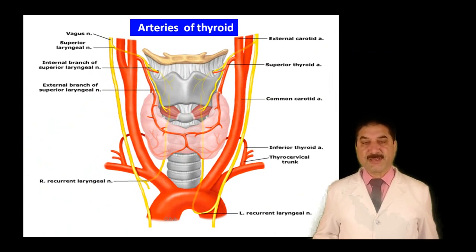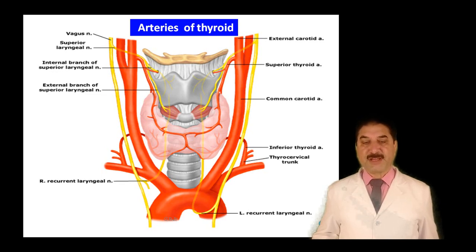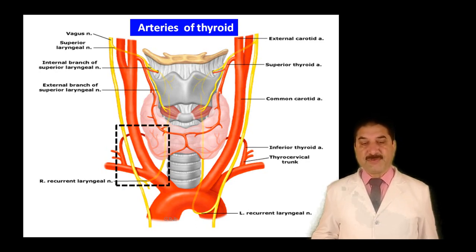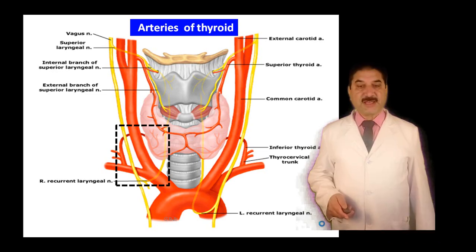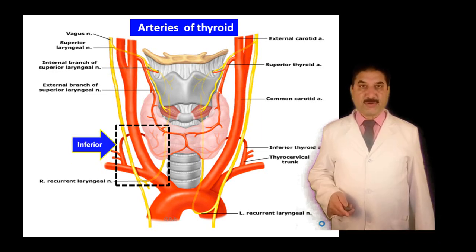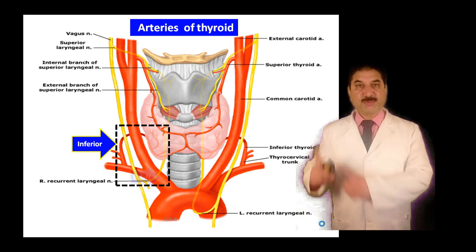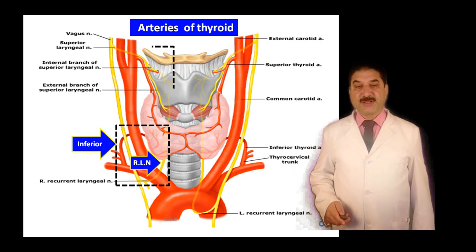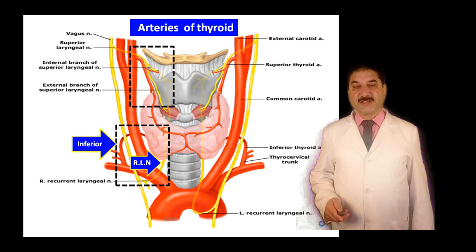Now let us look at the blood supply of the thyroid gland. The thyroid gland is supplied by the inferior thyroid artery, which is a branch of the thyrocervical trunk — it is the main blood supply to the thyroid gland. The inferior thyroid artery is related to the recurrent laryngeal nerve. The thyroid also receives blood supply through the superior thyroid arteries, which are related to the external laryngeal branch of the superior laryngeal nerve.